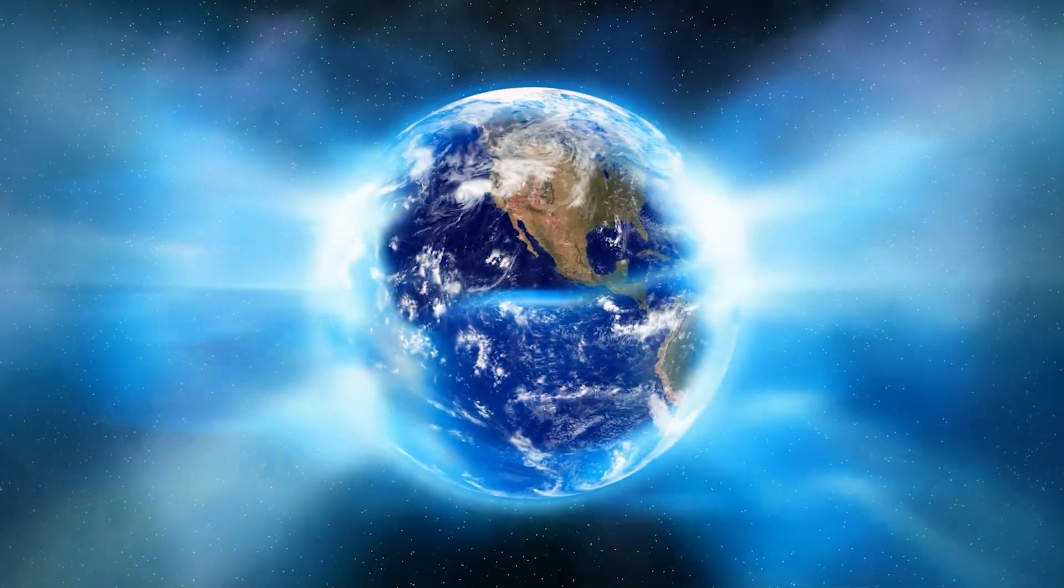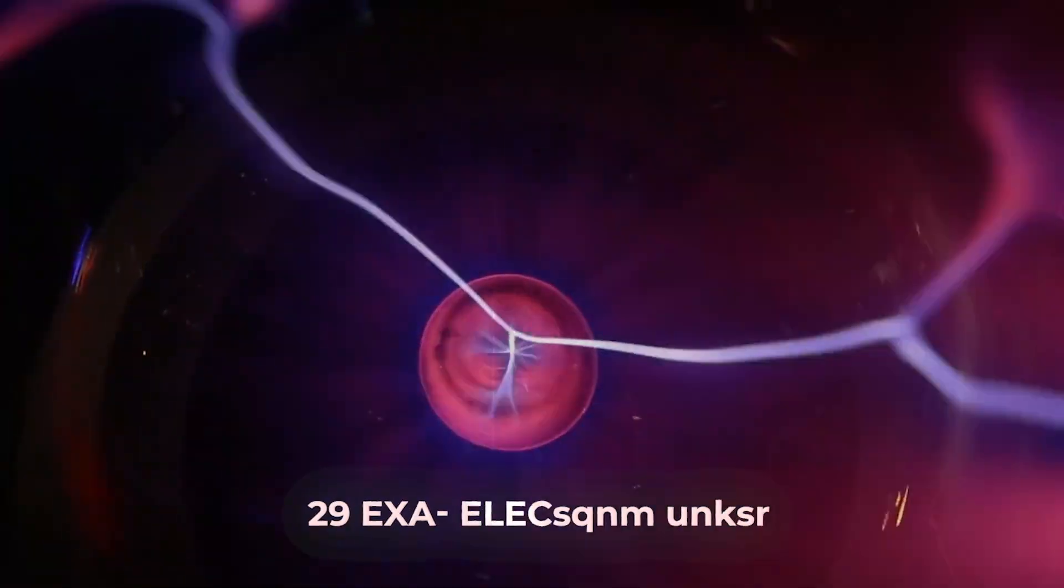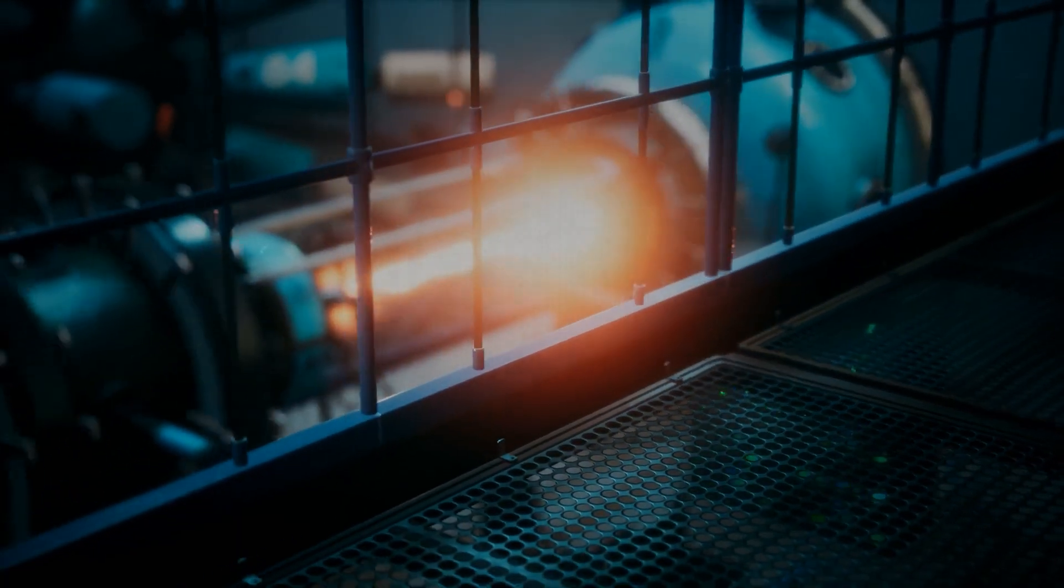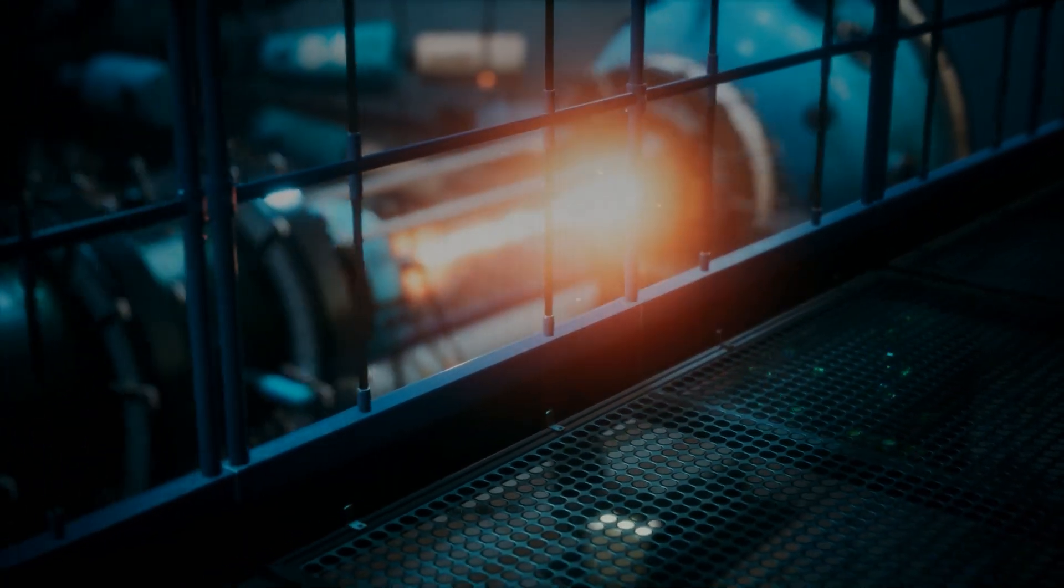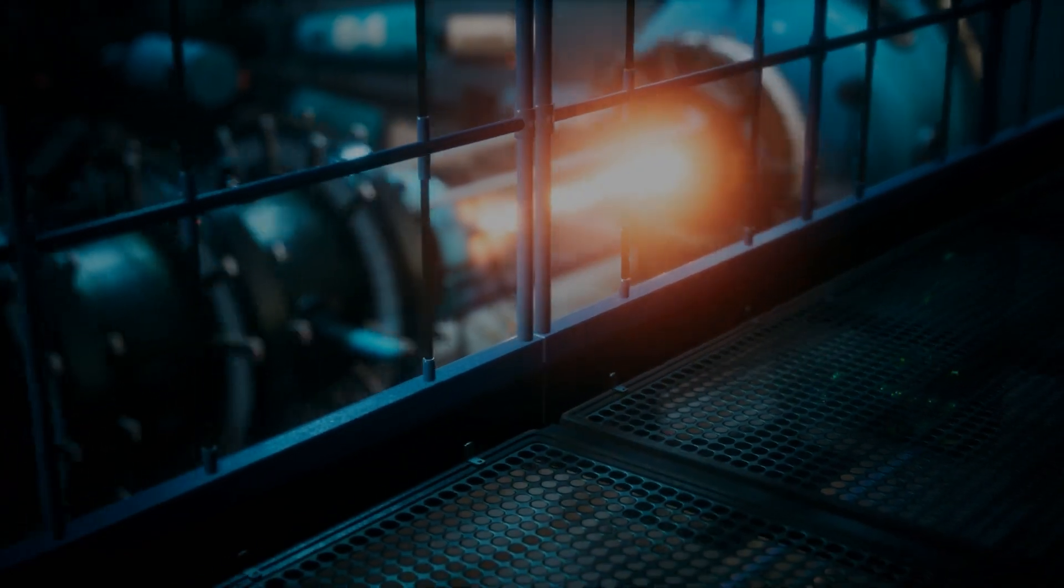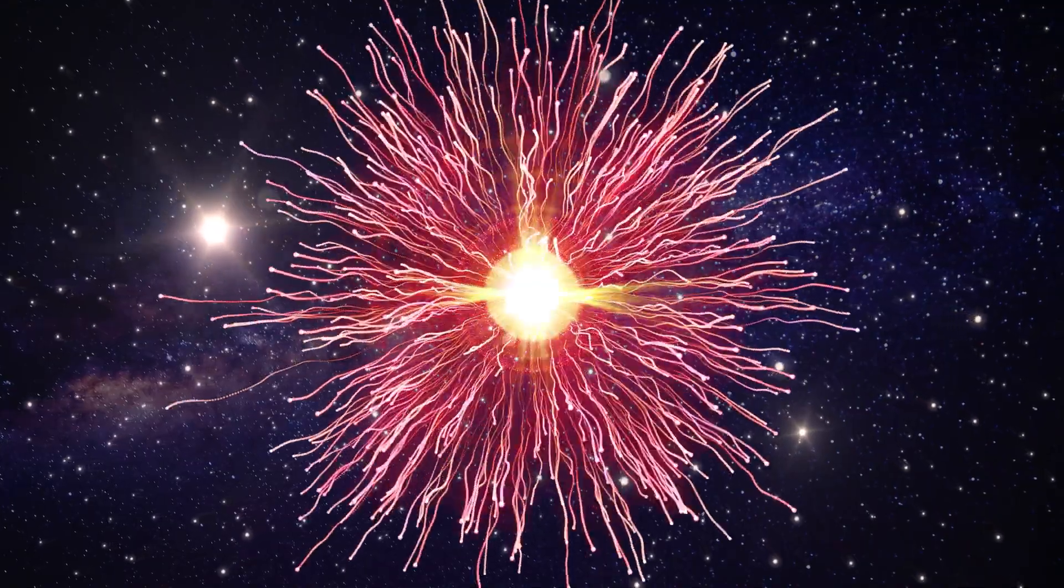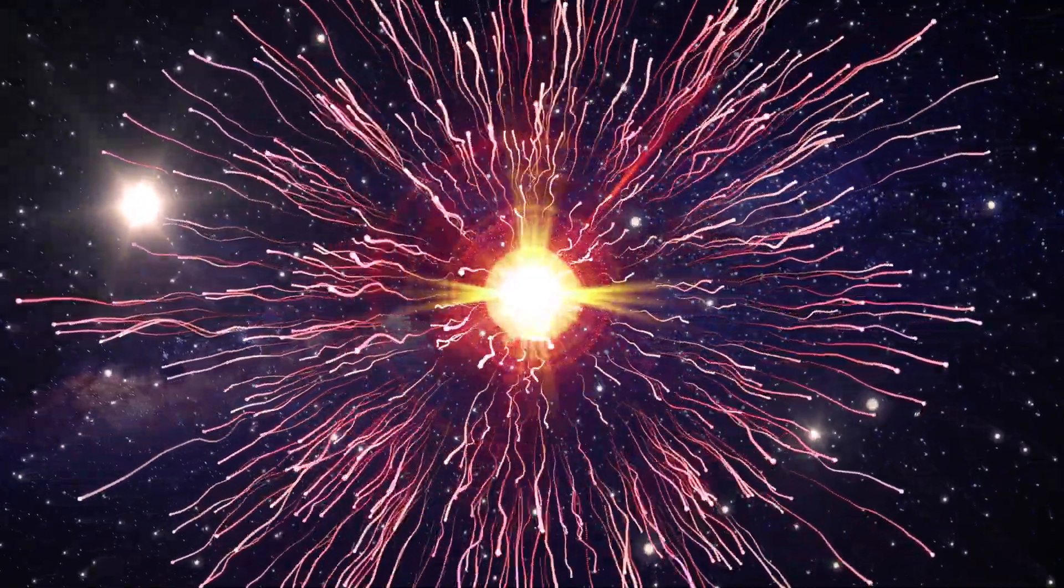When the Oh My God particle hit a nitrogen nucleus, it produced 29 exa-electron volts, much higher than the highest collision energy of the Large Hadron Collider, a big particle accelerator. In simple terms, the collision produced particles with much energy, moving almost as fast as light.